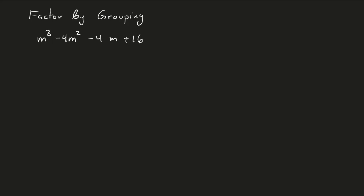One of the more basic ways of factoring is factoring by grouping, or noticing if you have common factors amongst each term of the polynomial. Looking at the first two terms, I notice there is an m squared involved. Likewise, looking at the next two terms, I notice there is a 4 involved. So I can factor m squared out of the first two terms and a 4 out of the second two terms.